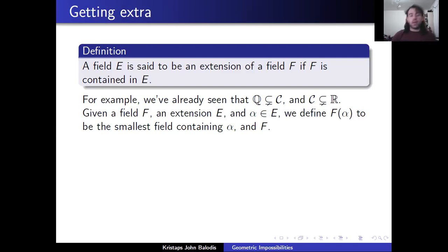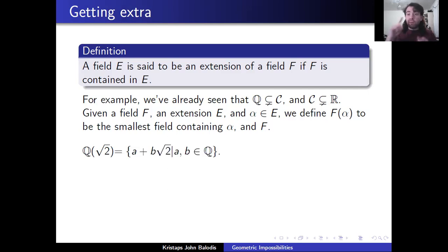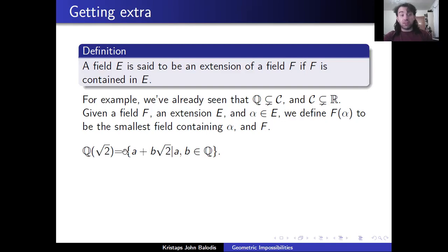Now, given a field F and some extension of it, we take some alpha in this extension. We define F adjoin alpha to be the smallest field that contains alpha and everything in F. In the case of Q adjoin square root of two, all the rational numbers have to be in there, the square root of two has to be in there, but we also have to be able to add things together — so things like one plus the square root of two must be in there. We have to be able to multiply the square root of two by any rational. My claim is that this is exactly the set of numbers of the form a plus b times square root of two.